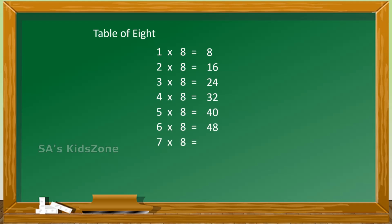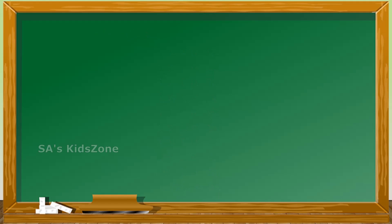7 eights are 56, 8 eights are 64, 9 eights are 72, 10 eights are 80. The next is table of 9: 1 nine is 9.